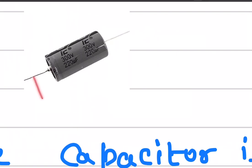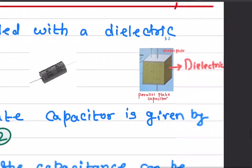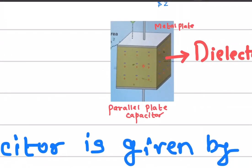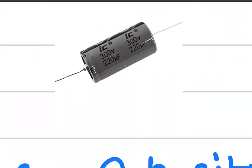What does that mean? That means if we apply more than 300 volts across this capacitor — let's say 500 volts — then the dielectric inside the capacitor will start conducting. Even this insulator will start conducting, because the electric field between the two plates will be so high that it breaks down the insulating layer. The current will start flowing through this insulator and will be so high that the capacitor will blow away. That is why we should never exceed 300 volts.